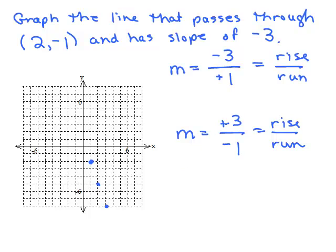Instead, use positive 3 over negative 1 from the starting point 2, negative 1. That means run negative 1 — go to the left 1 — and up 3. Left 1 and up 3 again. You can get many more points using that form of the slope.